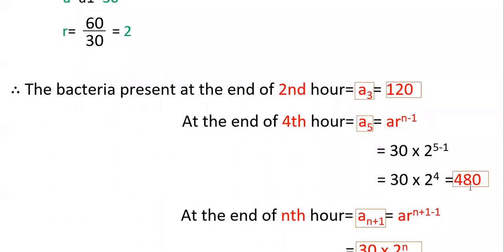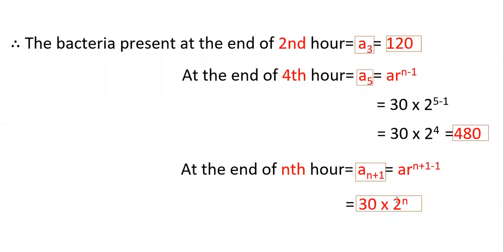At the end of the fourth hour the bacteria are 480. At the end of nth hour, aₙ₊₁ equals a times r to the power of n plus 1 minus 1, that is n. That is 30 into 2 to the power of n, where r is 2. This is the bacteria at the end of n hour.